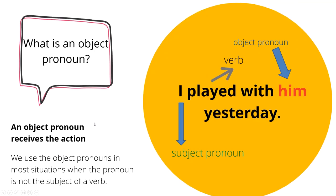What is an object pronoun? An object pronoun receives the action. Repeat after me: an object pronoun receives the action. We use object pronouns in most situations when the pronoun is not the subject of a verb. For example, 'I played with him yesterday.' Here 'I' would be our subject pronoun and 'him' would be our object pronoun.